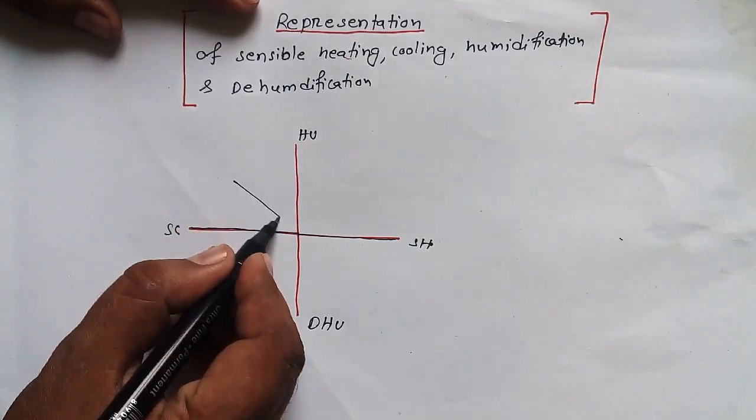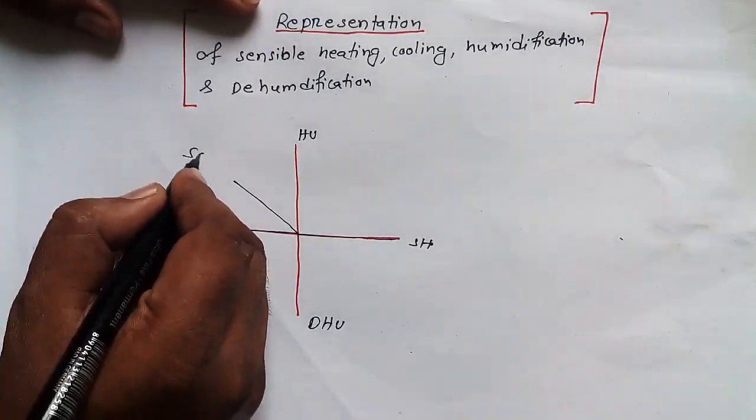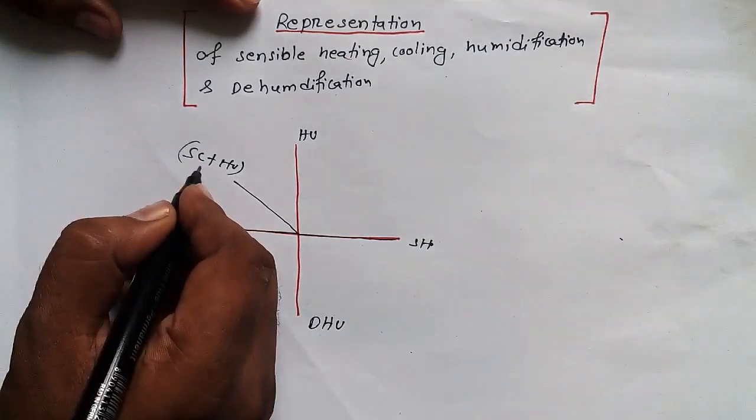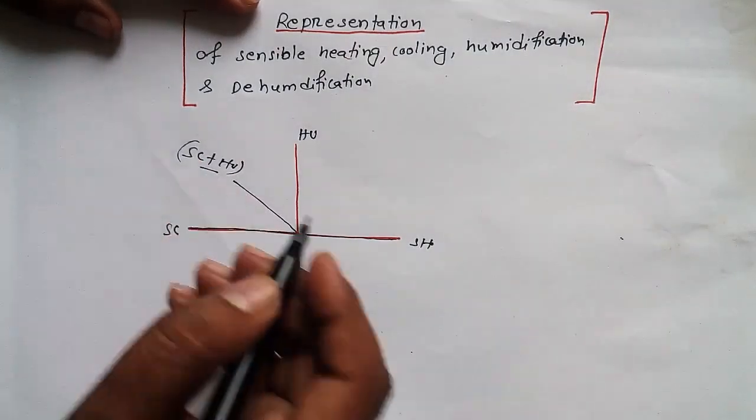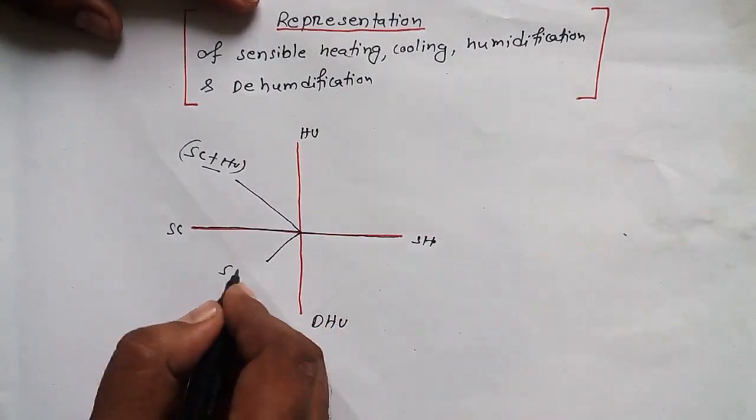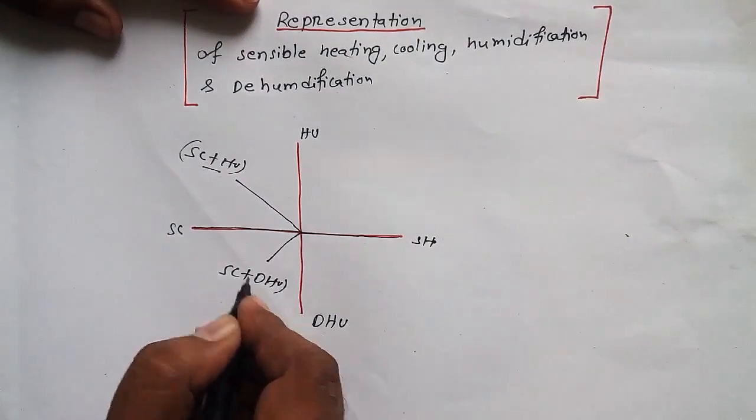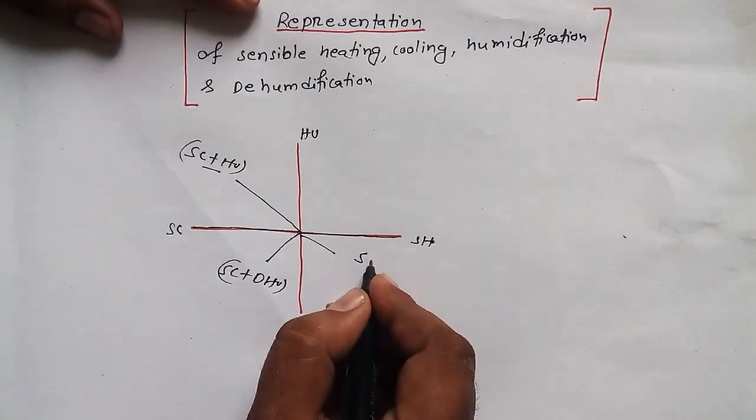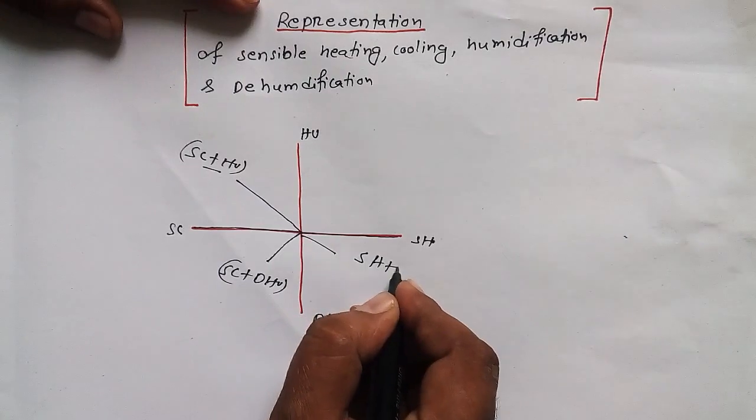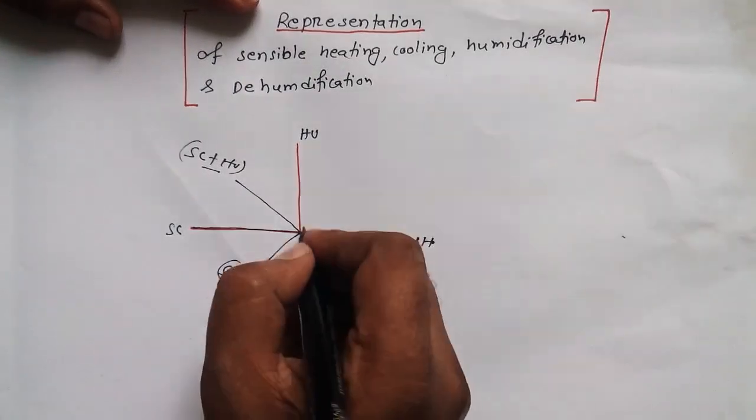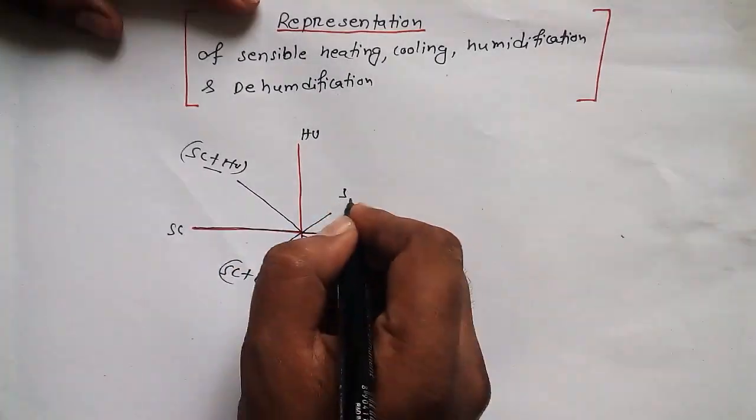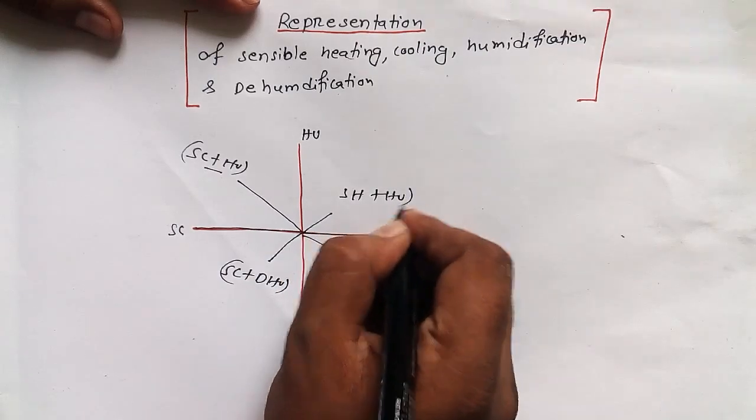Now how to represent it? If we will have anything here, then what is happening? Sensible heating, sensible cooling plus humidification. Here sensible cooling plus dehumidification. Here sensible heating plus dehumidification. Here sensible heating plus humidification.